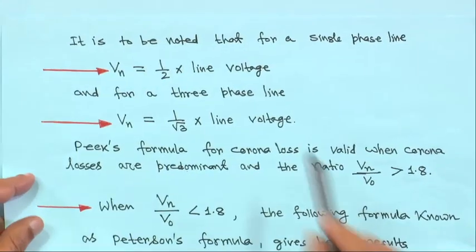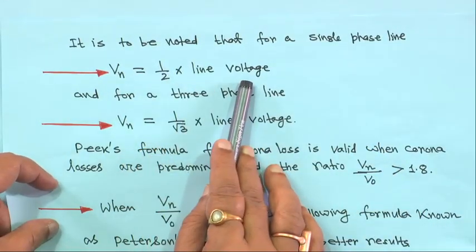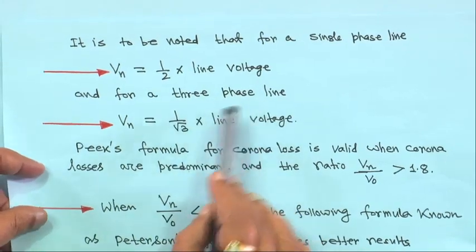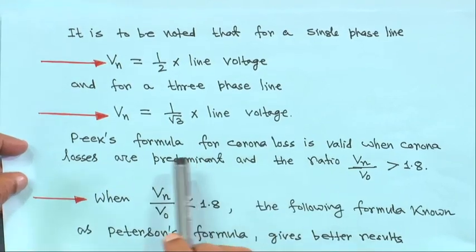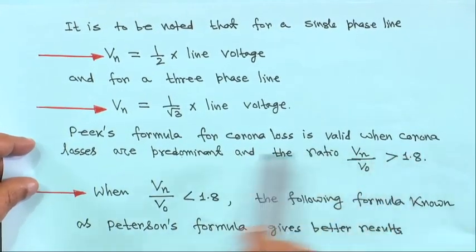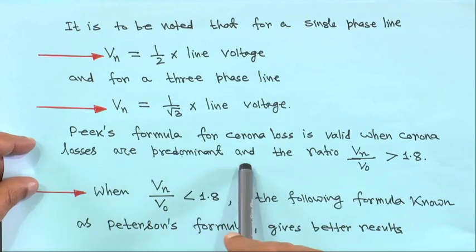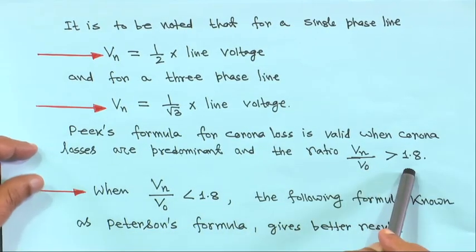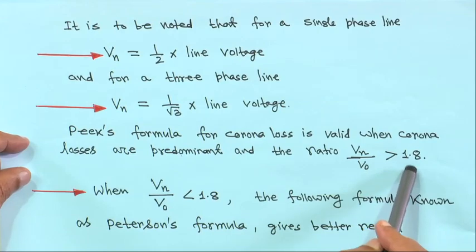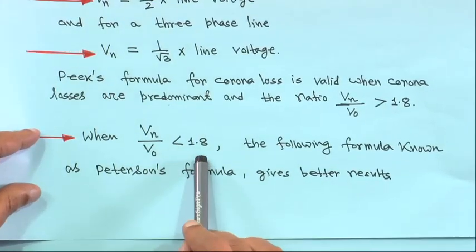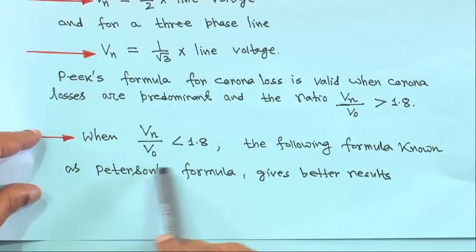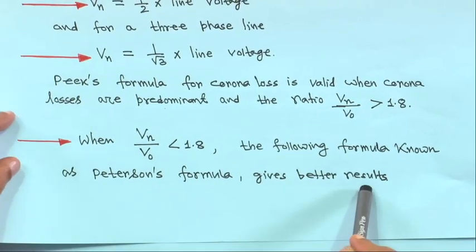It is to be noted that for a single phase line, VN should be half the line voltage, and for a three phase line, VN = (1/√3) × line voltage. Peek's formula for corona loss is valid when corona losses are predominant and the ratio VN/V0 is greater than 1.8. If VN/V0 is greater than 1.8, Peek's formula is quite valid.